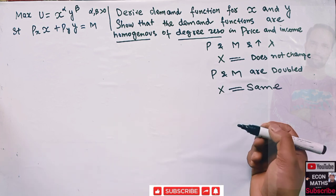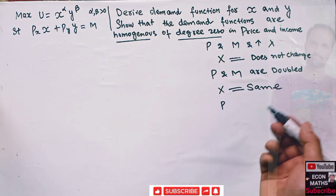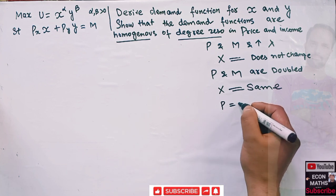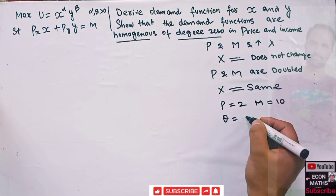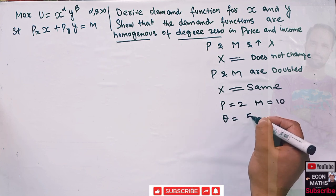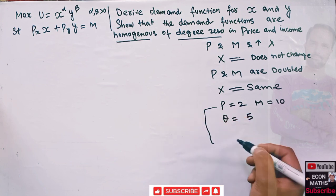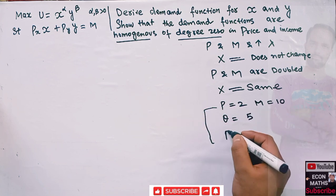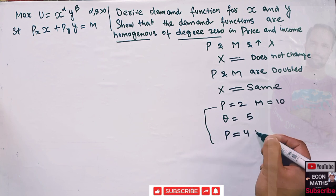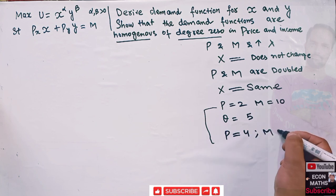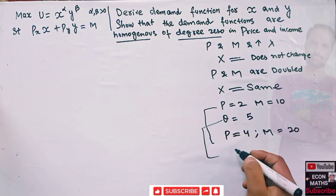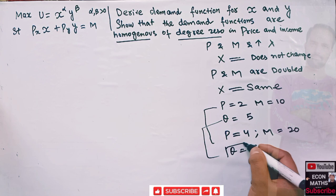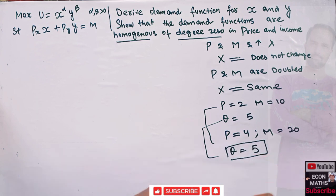To give a specific example: let us say price is 2, income is 10, and quantity demanded was originally, let us say, 5. If prices are doubled to 4 and income is doubled to 20, and our quantity demanded remains the same at 5, then in this case we say our demand function is homogeneous of degree zero.